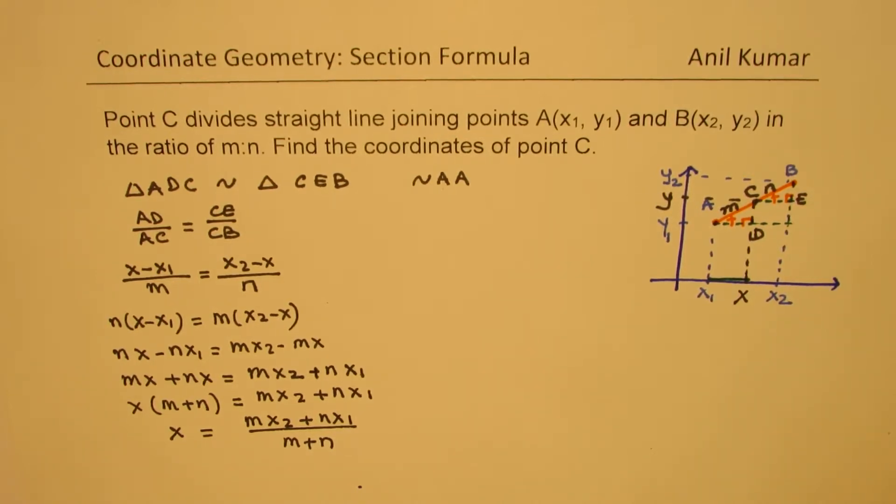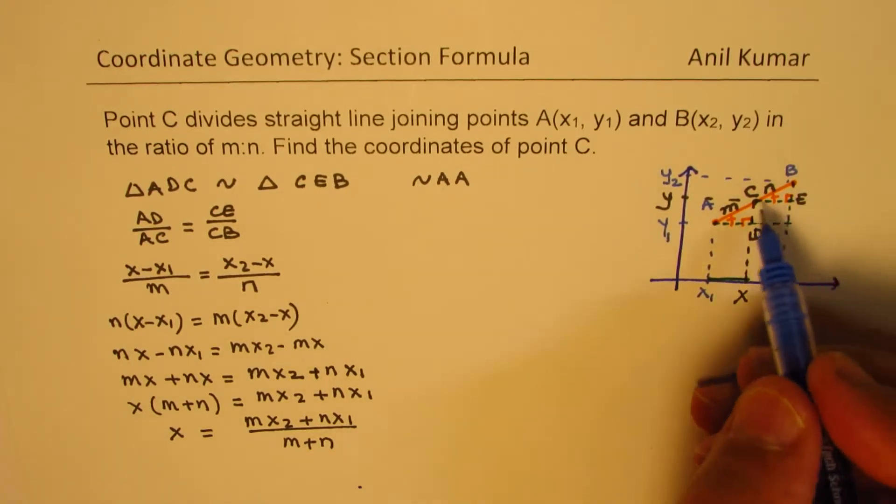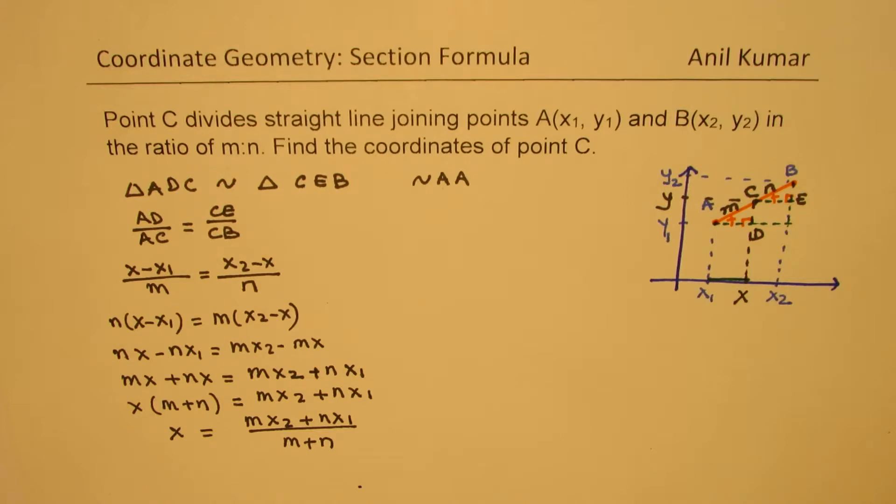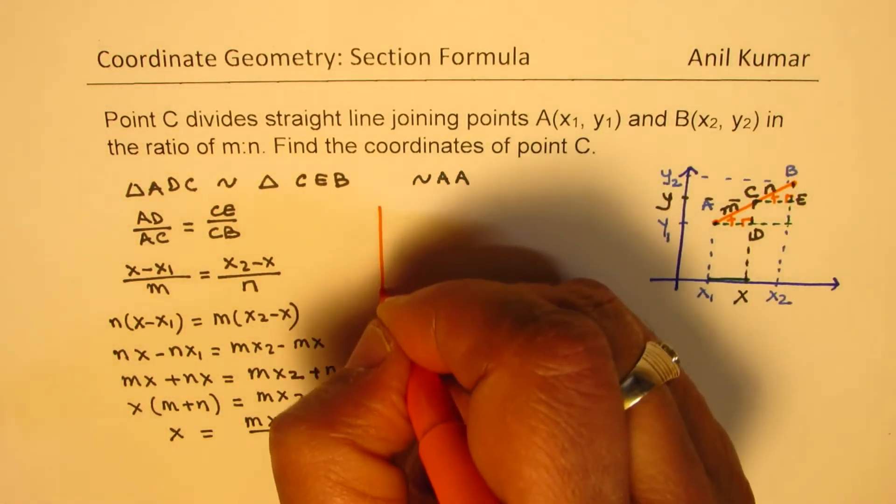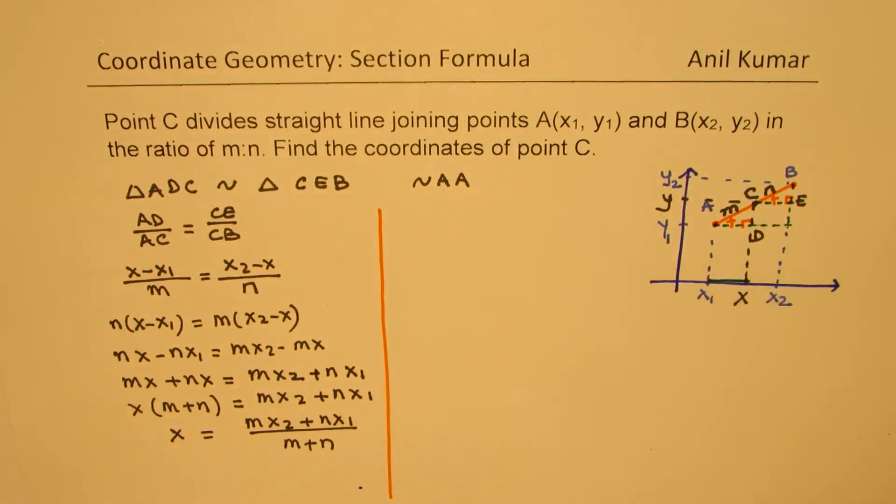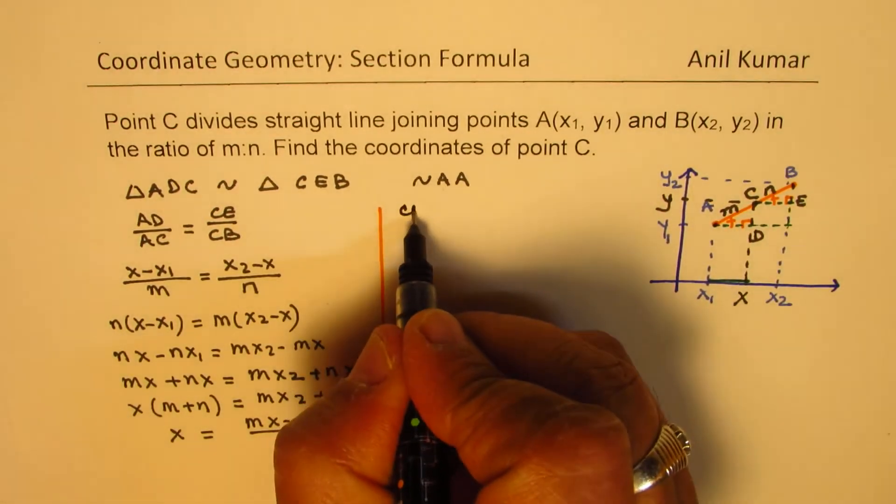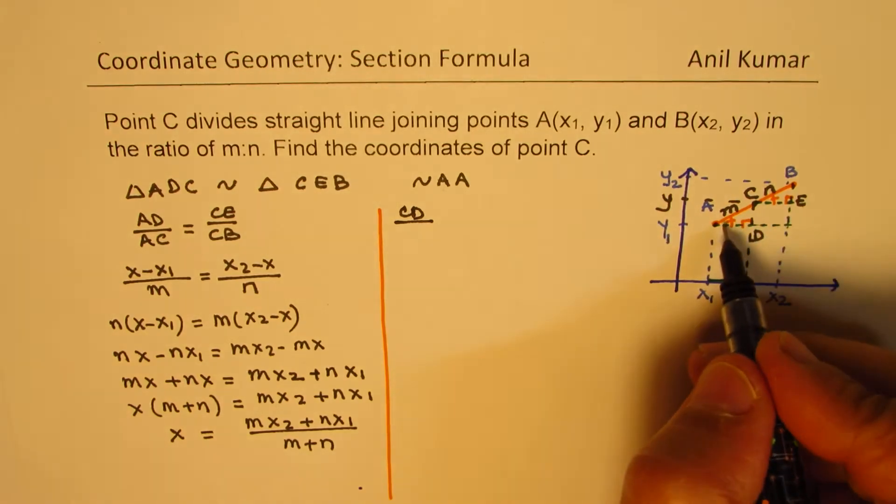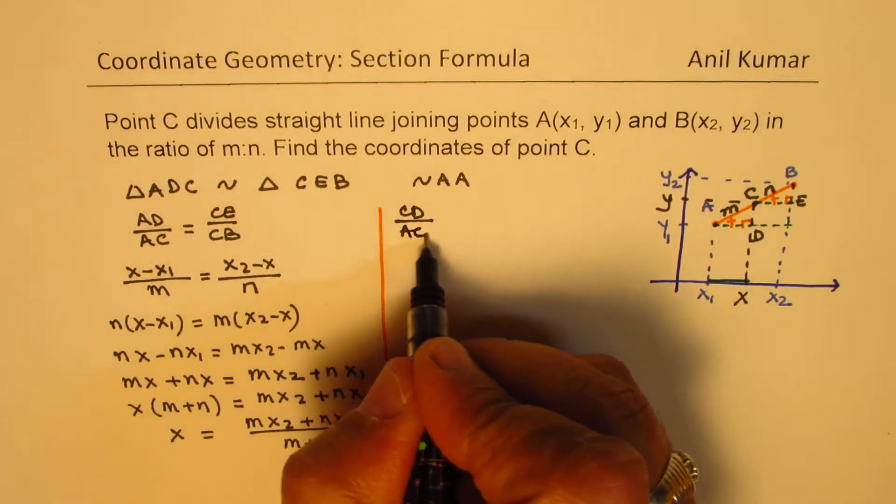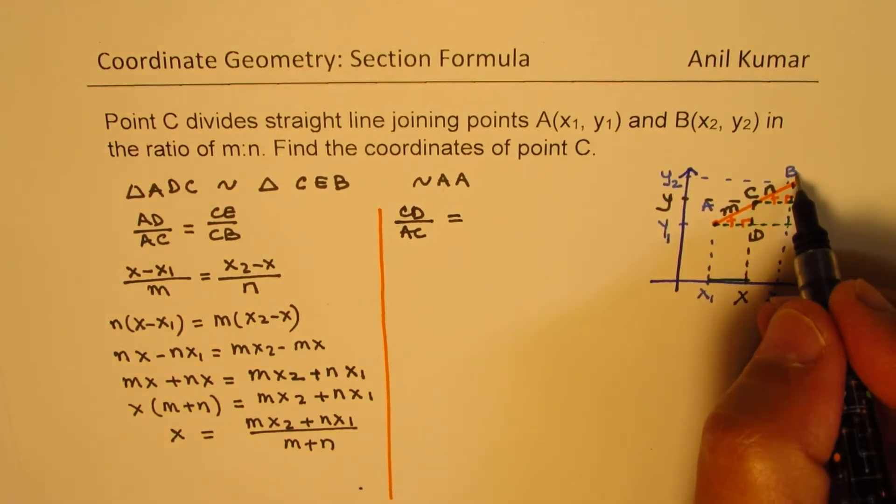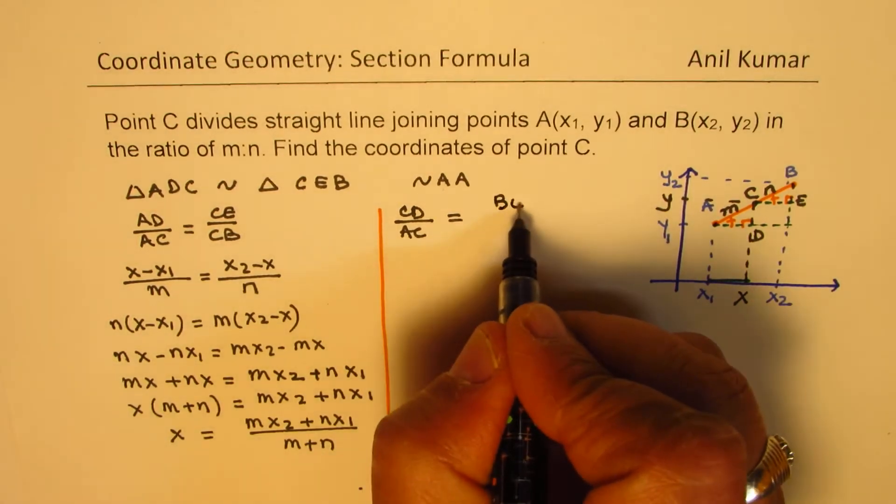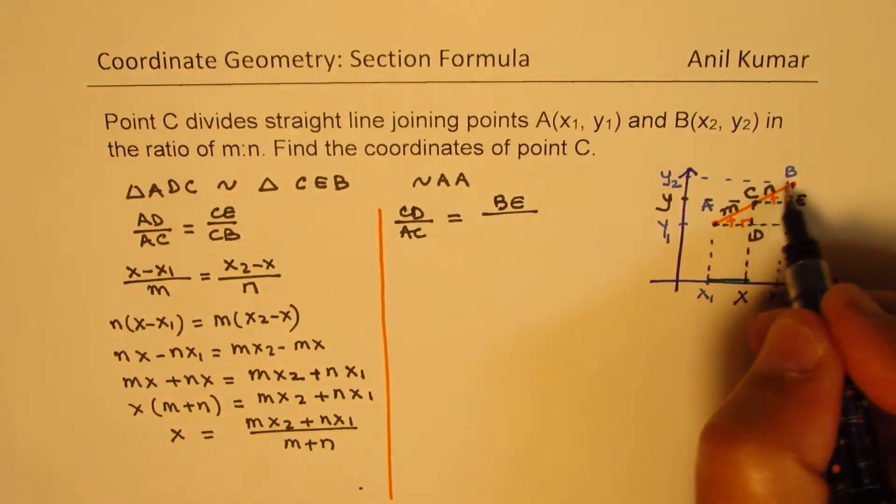Now to find the value of y, we know that the third side is also in the same ratio. So we'll again do the same thing. This time we'll take the ratio of the side, vertical side. CD over AC is equal to BE over CB.